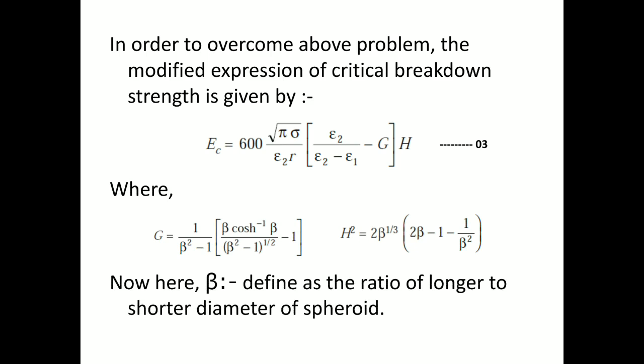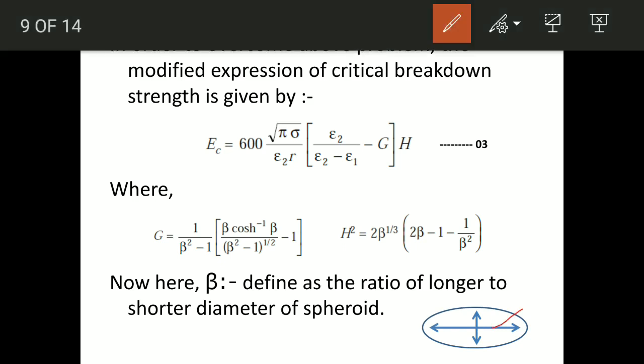In both expressions, beta is a common factor defined as the ratio of longer diameter to shorter diameter of a spheroid. Under the influence of the applied electric field, the gas bubble tries to elongate along its length, converting its shape from a sphere to a spheroid. The longer diameter and shorter diameter of this spheroid are indicated in the pictorial view, and their ratio is indicated by symbol beta. Once you know the value of beta, you can calculate G and H, and by knowing the permittivity of the air bubble and liquid, the value of r, and sigma, you can calculate the value of Ec.